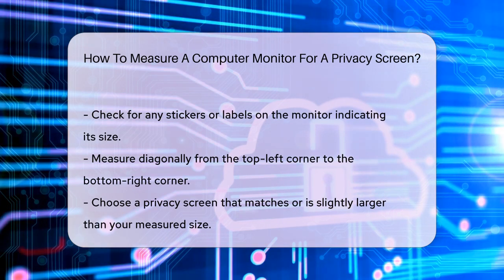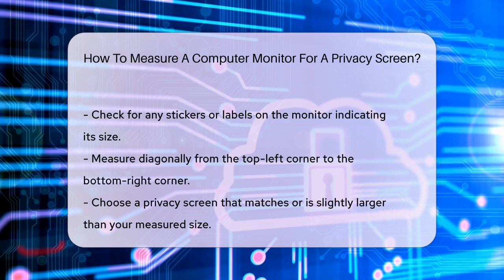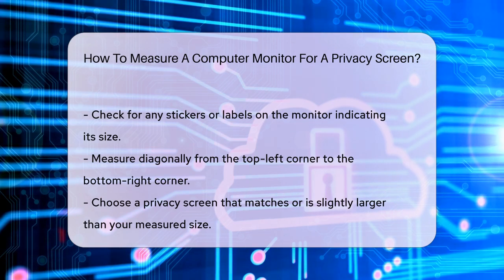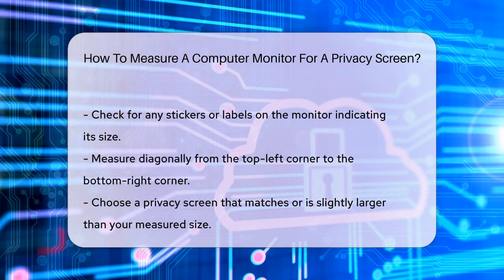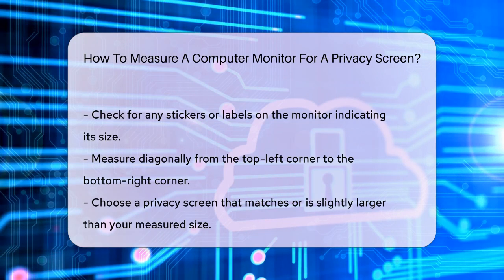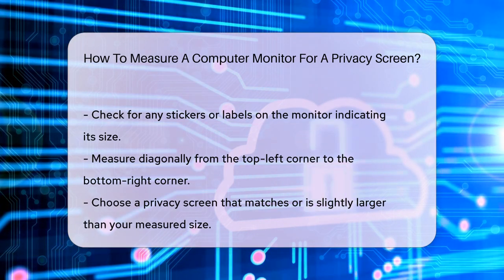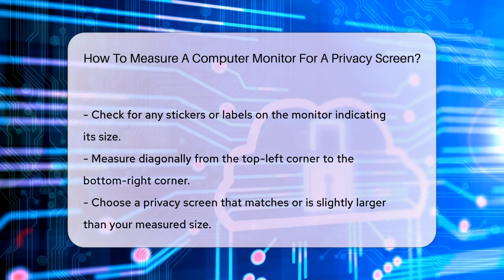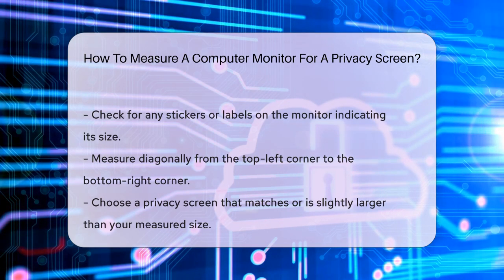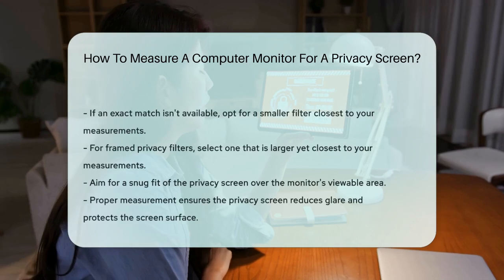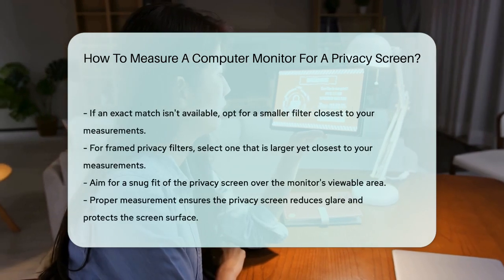When choosing a privacy screen, make sure to select one that matches or is slightly larger than your measured size. If you can't find an exact match, it's better to choose a filter that is smaller, yet closest to your measurements. For framed privacy filters, however, you should opt for one that is larger, yet closest to your measurements.